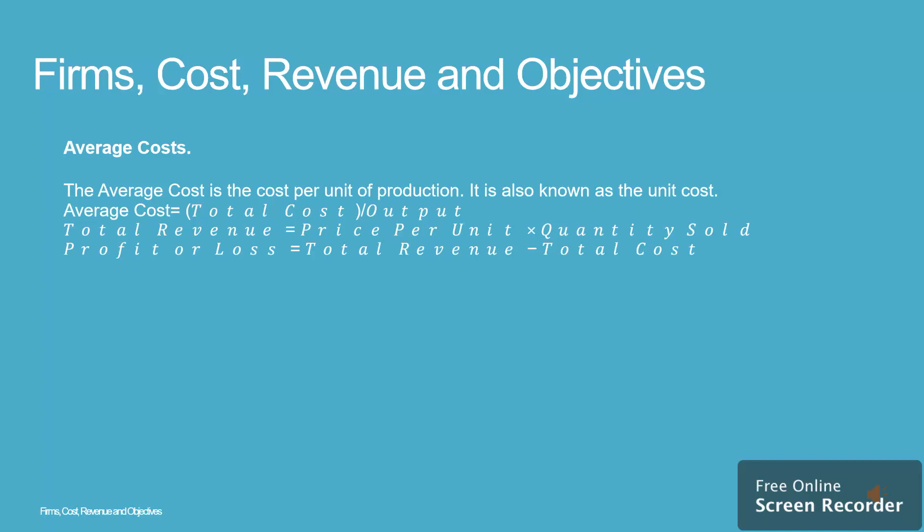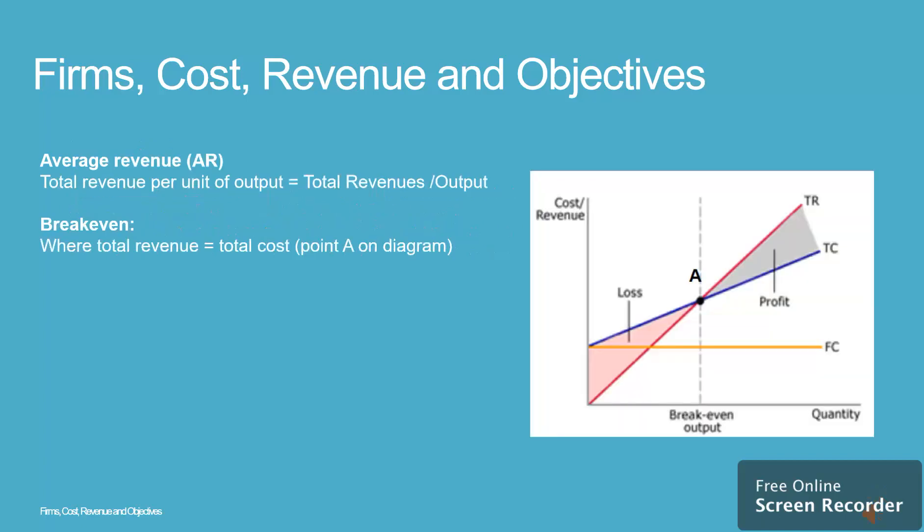Total revenue is equal to price per unit multiplied by quantity of goods. Average revenue per unit of output is equal to total revenue divided by output.